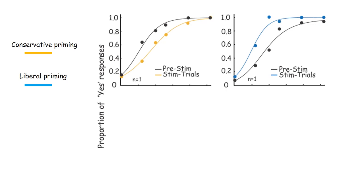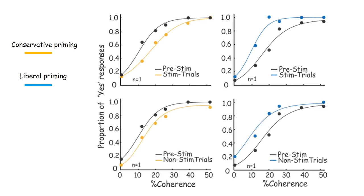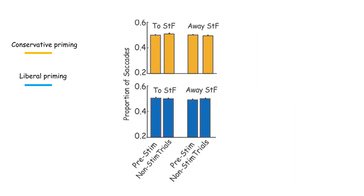Importantly, the effect of the stimulation influenced decisions even on trials when the stimulation did not occur, and it did not change the proportions of saccades either into or away from the stimulated field.